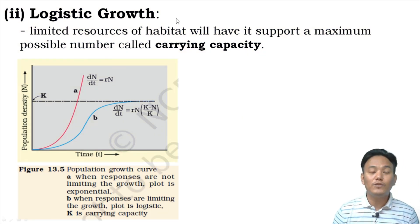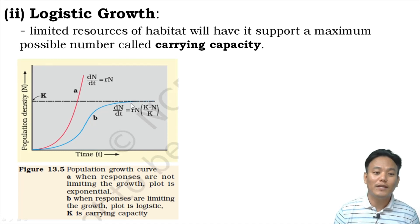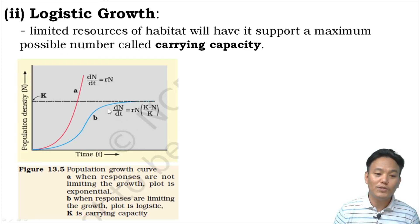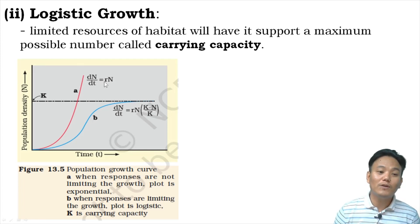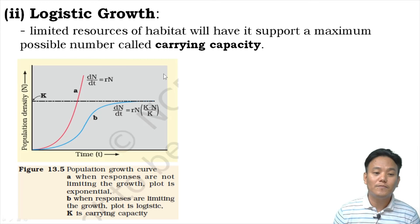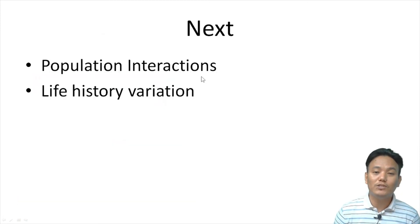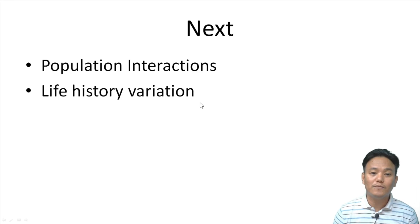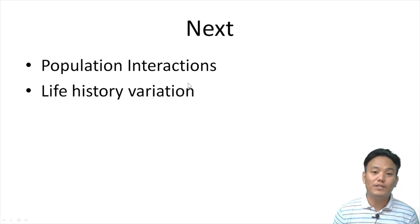Out of the two growth models, logistic growth is more realistic. You should remember the formula for exponential growth and the formula for logistic growth. In logistic growth, the carrying capacity factor K is included in the formula, whereas in exponential growth K is not included because unlimited resources are assumed. In the next video we will discuss population interactions and life history variation, which will be the final part of chapter 13, Organisms and Populations. Read about different types of population interactions. Thank you.